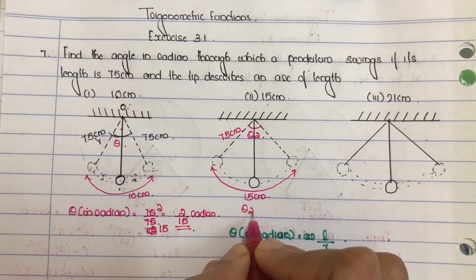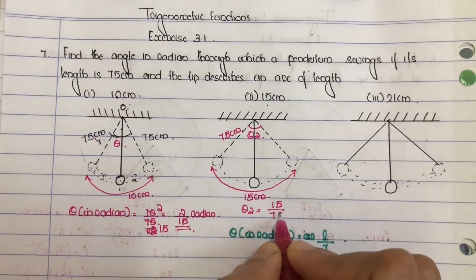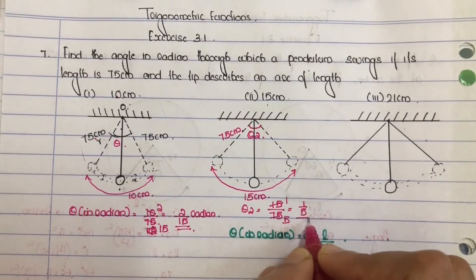So theta 2 is equal to L, L is 15 by 75, equal to 1 by 5 radian.